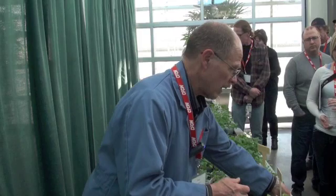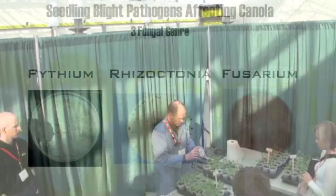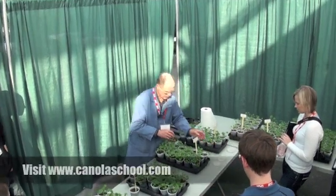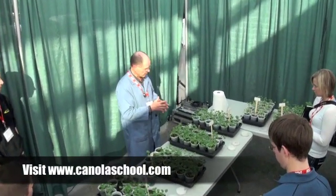Moving to the last two types of seedling blight, we have Fusarium — a very important and common group of plant pathogens. Fusarium will attack young seedlings; it's a soil-borne organism like Rhizoctonia, and it tends to be more active in warmer soils on the moist to dry side.